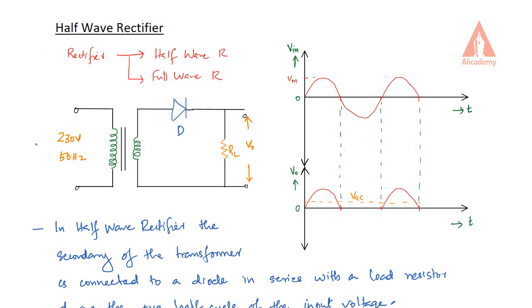In this diagram, we are having a transformer, and then we are having a diode which is connected in series with a load resistor RL.